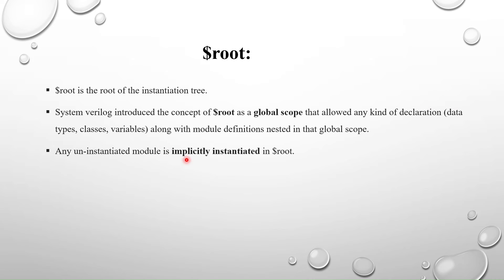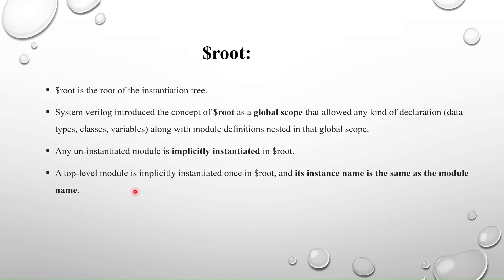Any uninstantiated module is implicitly instantiated in $root. If the top module doesn't have any instance, it will be implicitly created. A top-level module is implicitly instantiated once in $root, and its instance name is the same as the module name. Whatever the name of the top module is, that becomes the name of the instance.